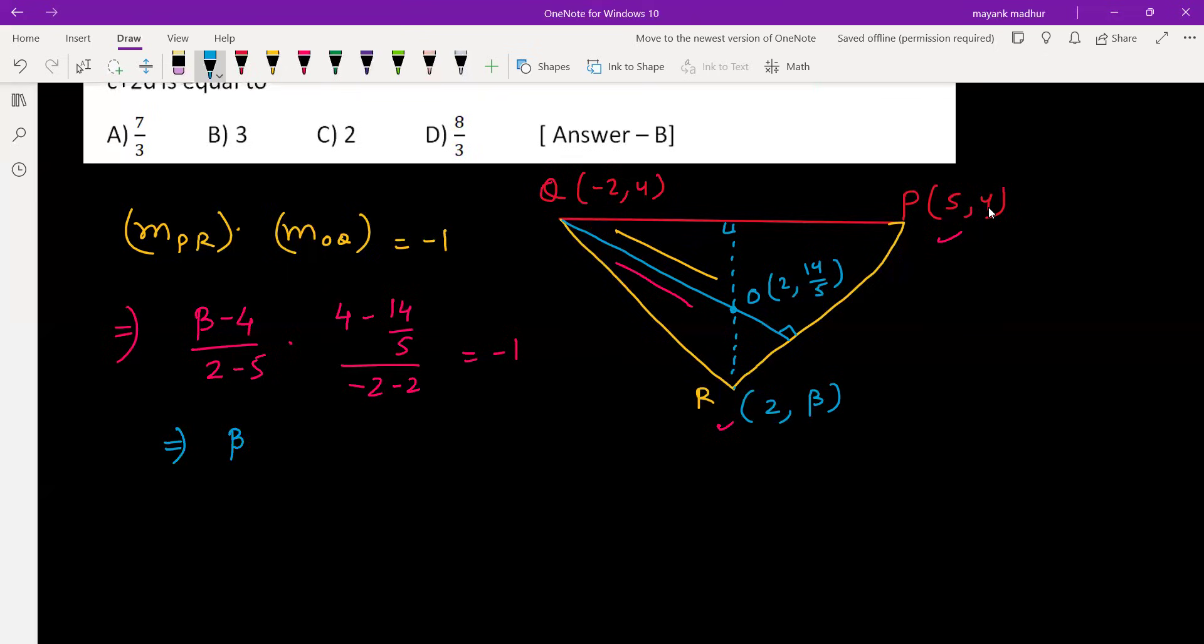Simplifying further: beta minus 4 divided by negative 3, into 20 minus 14, which is 6 by 5, divided by negative 4, equals negative 1. When you simplify, 3 and 6 can be cancelled, 2 can be cancelled with this 2, so we get beta by 4 equals negative 10. Beta value turns out to be negative 6.